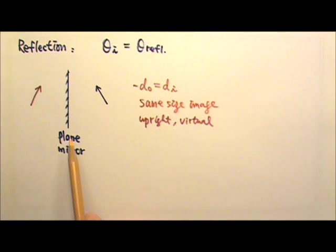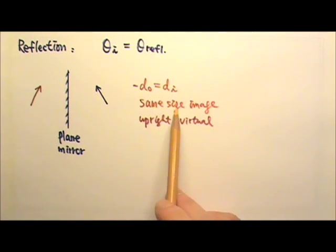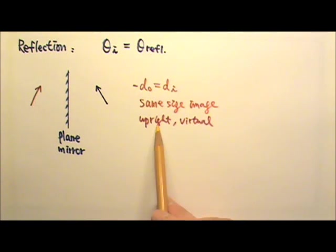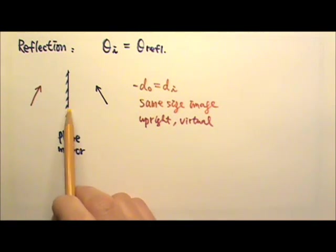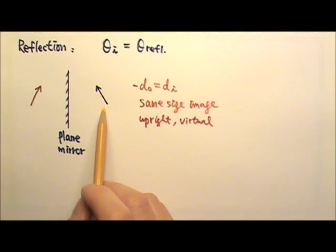The image produced by a plane mirror is the same size as the object, upright and virtual, and it is the same distance behind the mirror as the object is in front of the mirror.